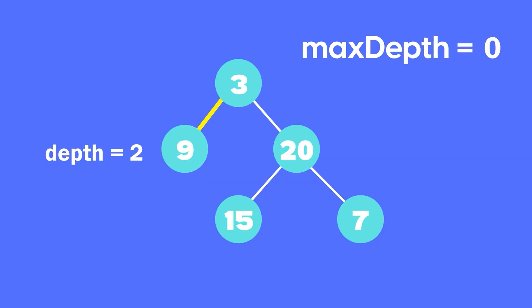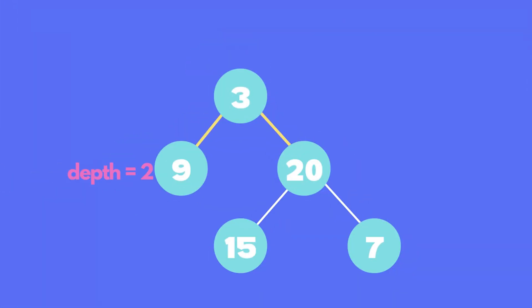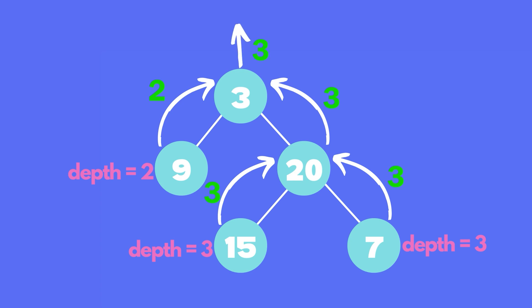If you look at our first solution, we calculate the depth as we go down and then find the maximum at the leaf nodes. This approach is completely top down. If you look at the second solution, we still calculate the depth as we go down, but the maximum depth is found as we come back up on the tree. So calculating depth is top down, but finding the maximum depth is bottom up in this case.